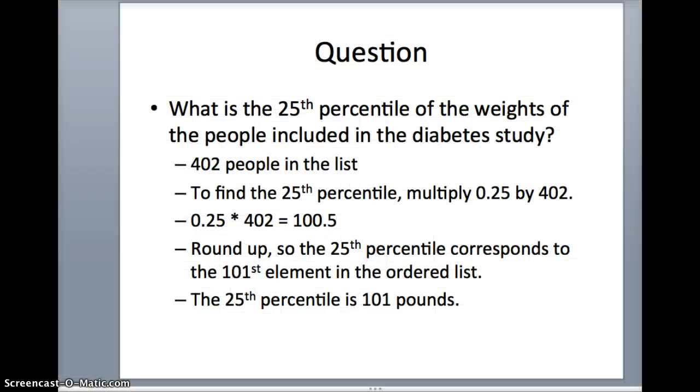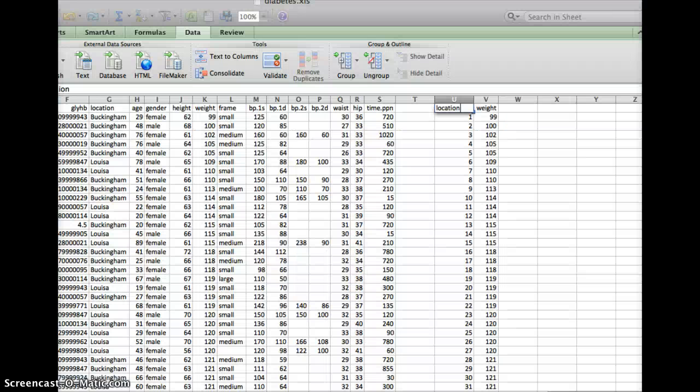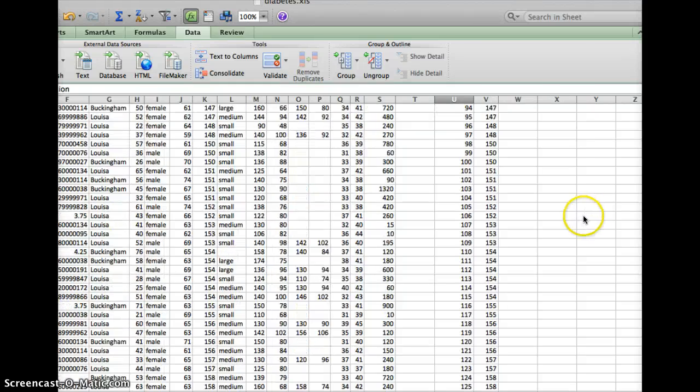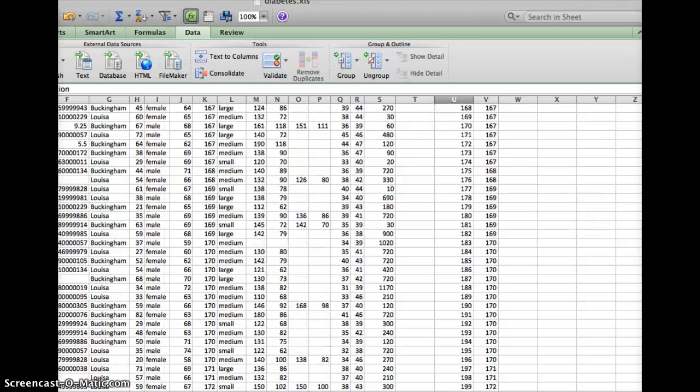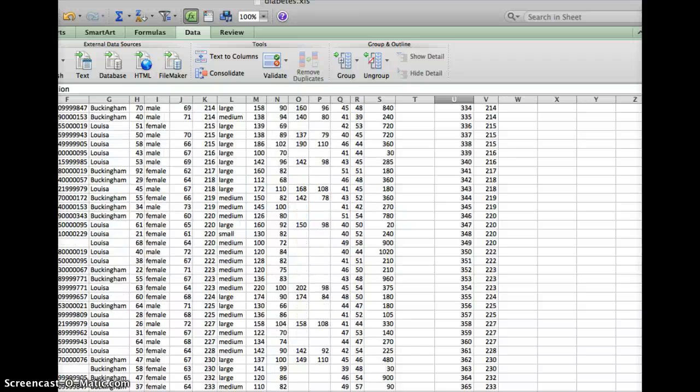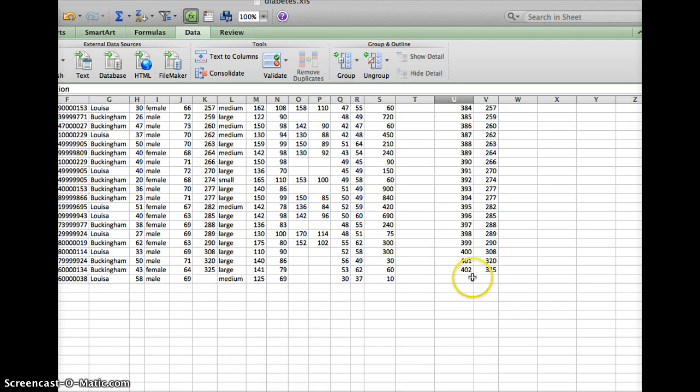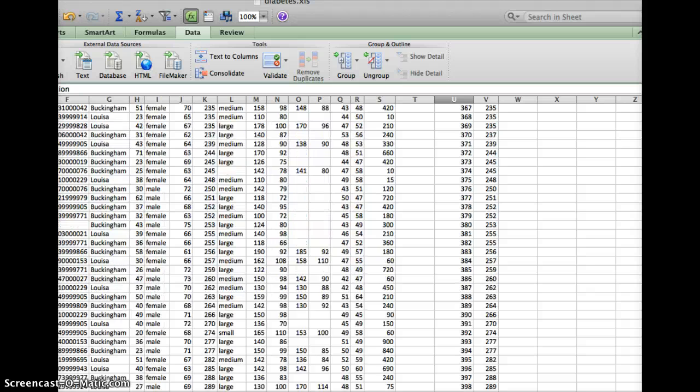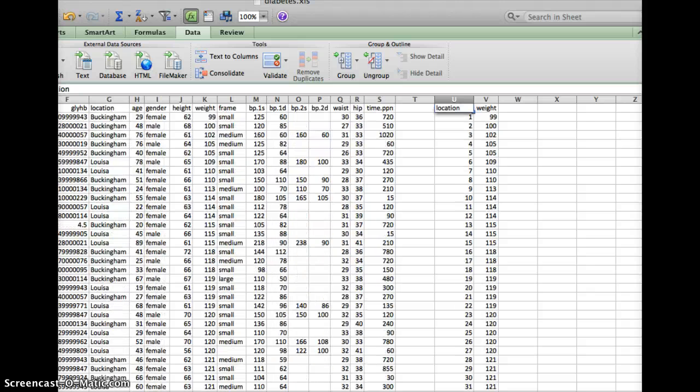The question says, what is the 25th percentile of the weights of the people included in the diabetes study? Well, I need to see how many people are on the list. According to my page here, it says 402 people are on the list. Let's go back and check the Excel sheet. As I scroll this down, the last number in the list is number 402. So there are indeed 402 elements on that list.